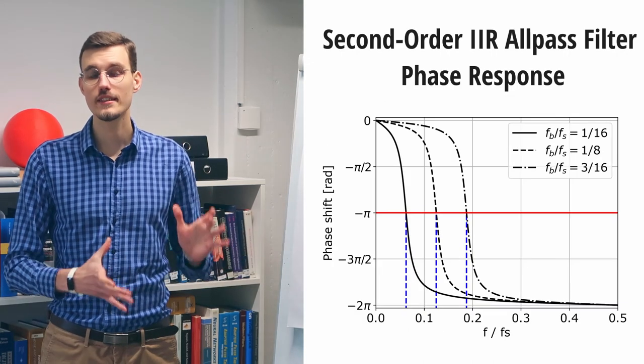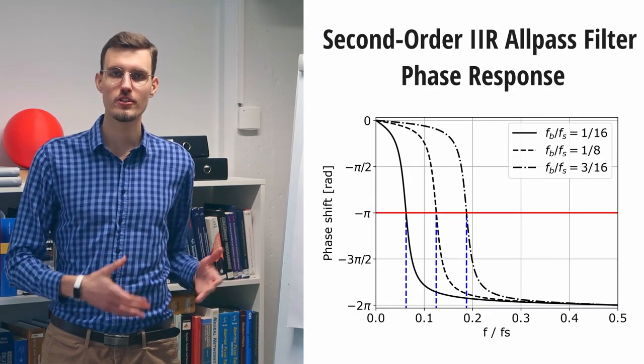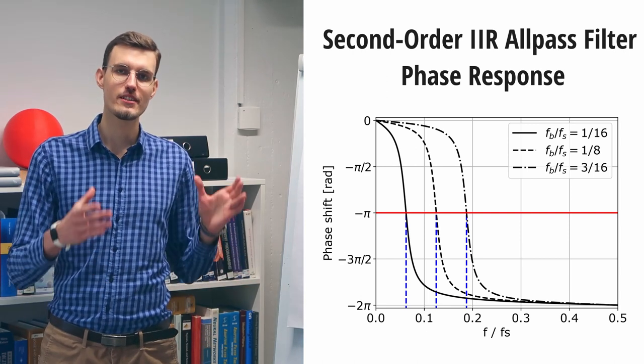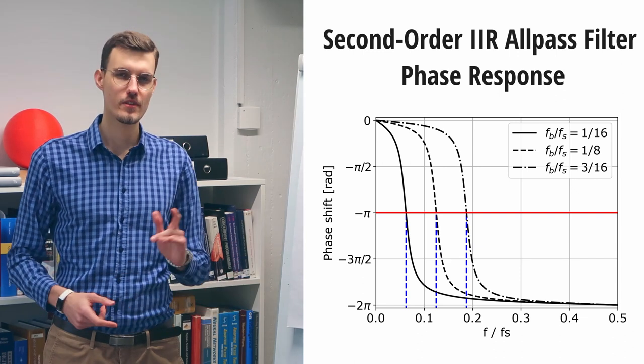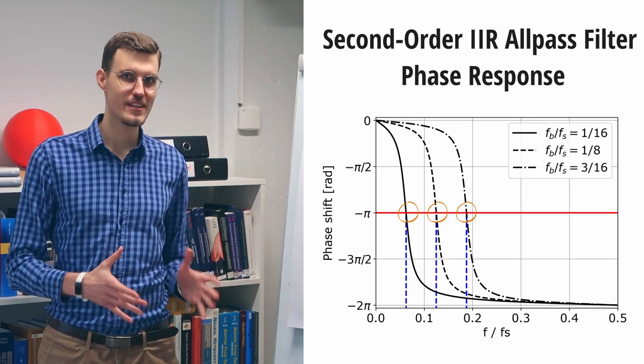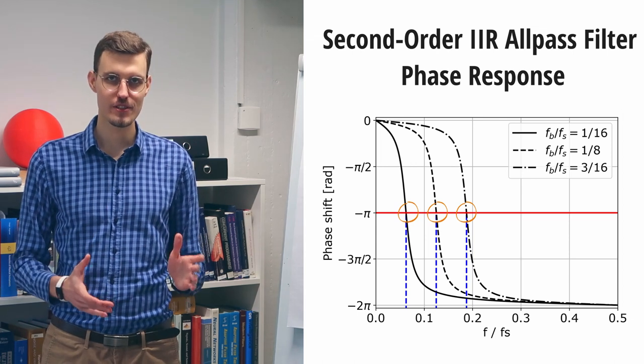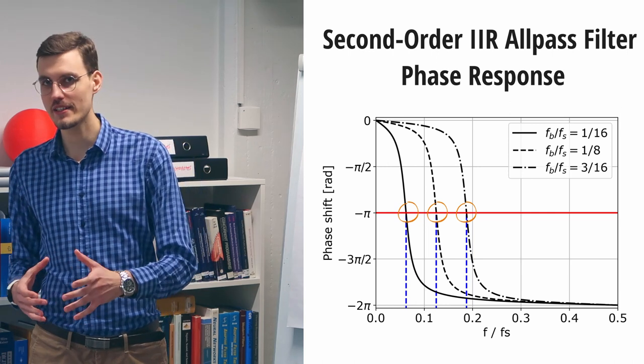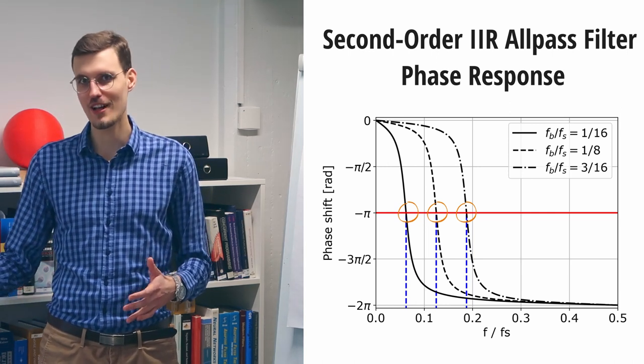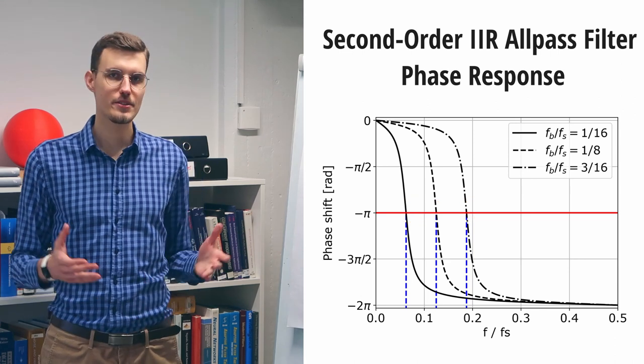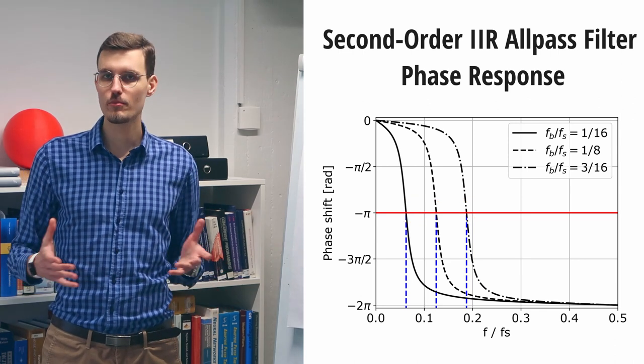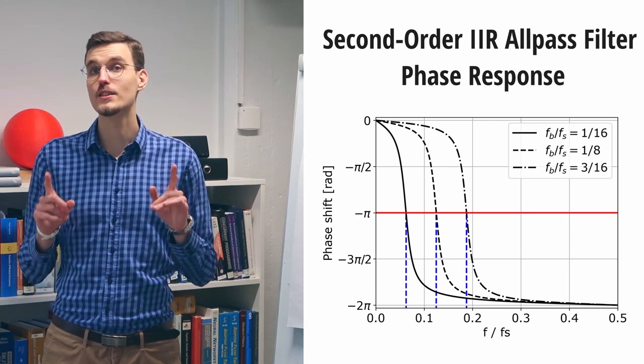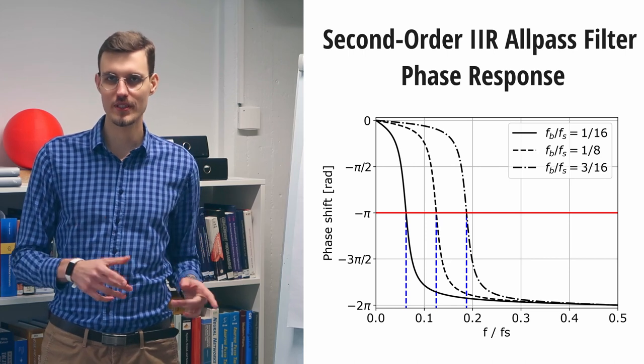To see how, let's examine the phase response of the second-order ALLPASS filter. On this plot, we can see phase responses of three second-order ALLPASS filters with the same bandwidth parameter, but with different break frequencies. Note how now break frequency means the phase shift of minus pi, not minus pi over two radians, as it was the case for the first-order ALLPASS filter. As you can see, regardless of the break frequency, the shape of the phase response curve is the same. This was not the case for the first-order ALLPASS filter.